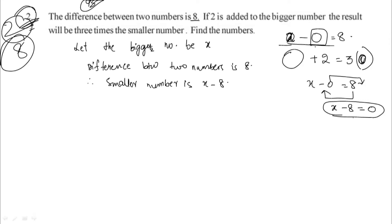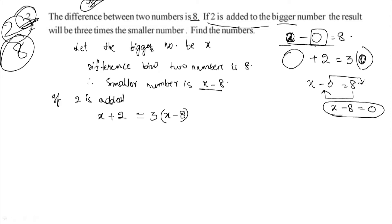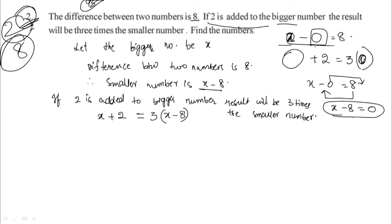If 2 is added to the bigger number, the result will be 3 times the smaller number. So x plus 2, adding 2 to the bigger number x, gives a result equal to 3 times the smaller number, which is x minus 8. So the equation is: x plus 2 equals 3 into (x minus 8).